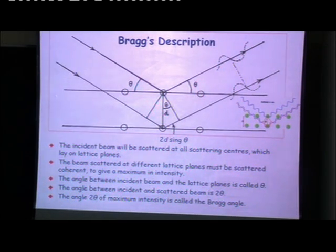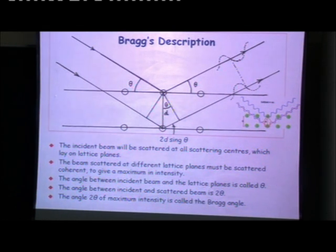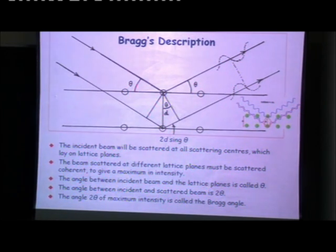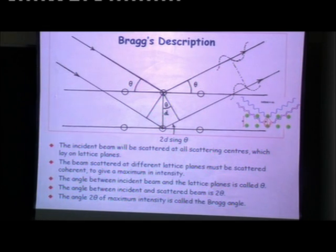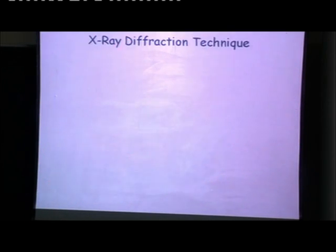By solving the phase problem and finding the relative positions, you can finally identify the electron densities. What you are ultimately looking at in X-ray crystallography is the electron density, because it is the electrons that are diffracting the X-rays. The position of the electron density tells you what you get from the X-ray experiment. Once you have the electron density, depending on how much electron density you find, you can assign the atom — for example, carbon, nitrogen, or oxygen — and build up the molecular structure.